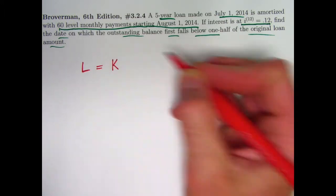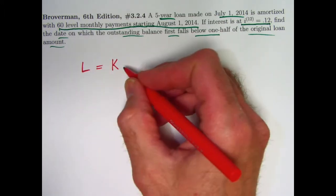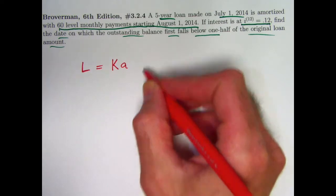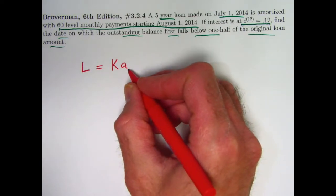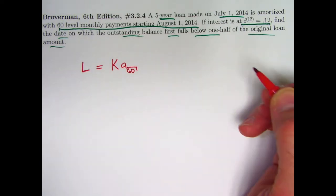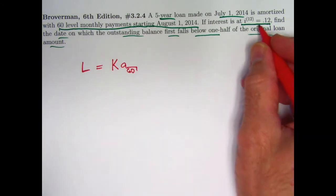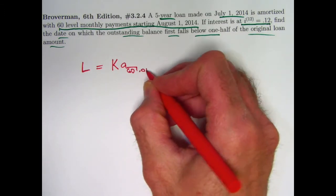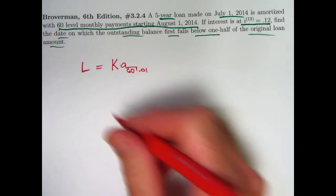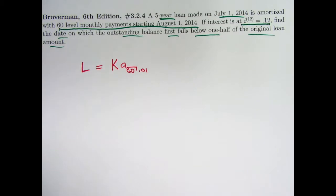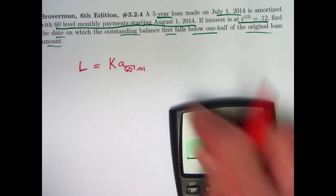If the payment level payment amount is K, then L would be K times A. It's a five year loan each month, so you've got 60 months. And if the annual interest rate is 12% compounded monthly, that means the monthly interest rate is 1%. So no matter what L and K are, there's got to be this relationship between them. And we can certainly find out what A is.